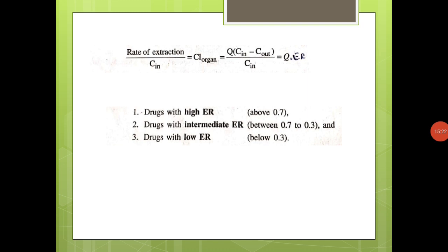The extraction ratio is an index showing how efficiently an organ clears the drug from the body. Like clearance, t½, and elimination rate constant, extraction ratio is also considered a parameter in clinical pharmacokinetics for determining the pharmacokinetics of a drug molecule. Based on the extraction ratio, drugs are classified into three groups: high extraction ratio (above 0.7), intermediate (0.3–0.7), and low extraction ratio (below 0.3).